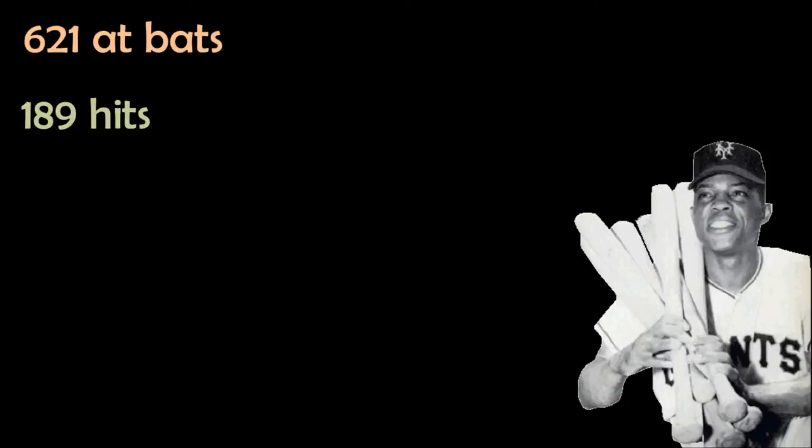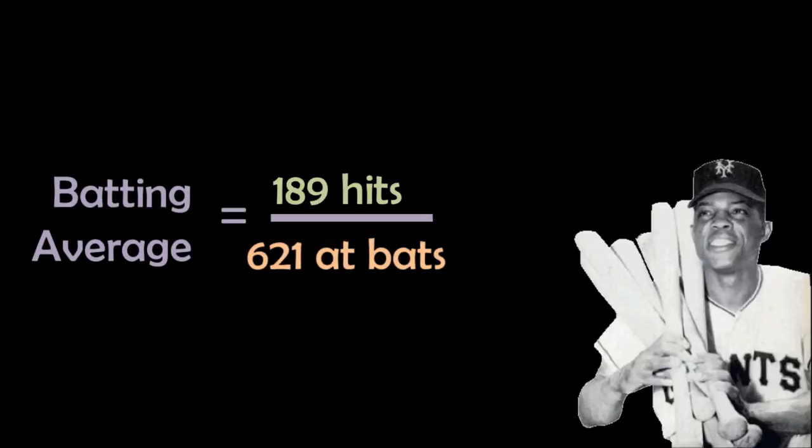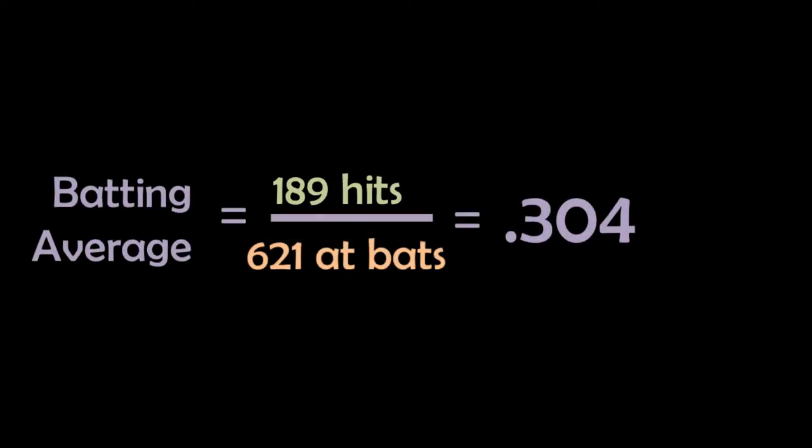So 189 divided by 621 of course gives us .304 and we round it off to three decimal places. So what does this tell us? Well, if Mr. Mays were to bat a thousand times and he kept up this pace he would have 304 hits. Okay, so is that good? And yes, as it turns out it is good.